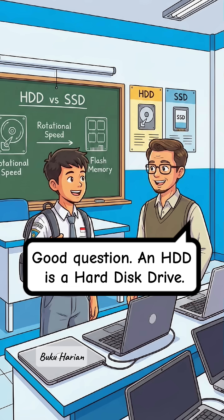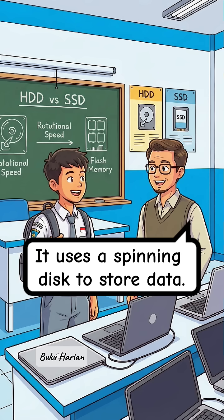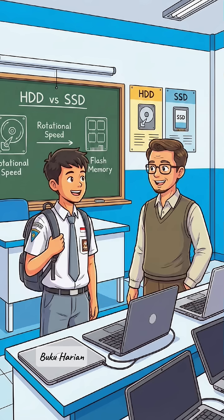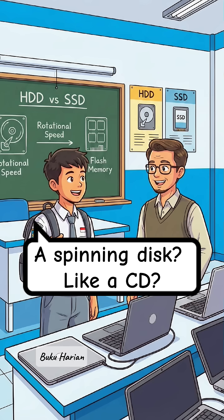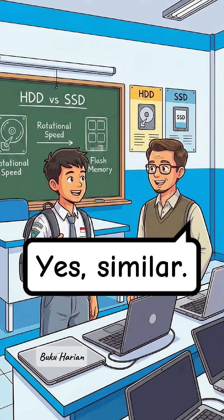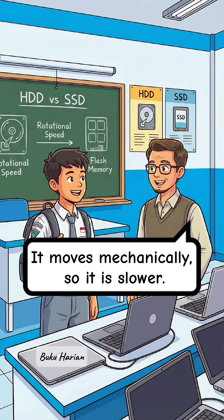An HDD is a hard disk drive. It uses a spinning disk to store data. A spinning disk? Like a CD? Yes, similar. It moves mechanically, so it is slower.